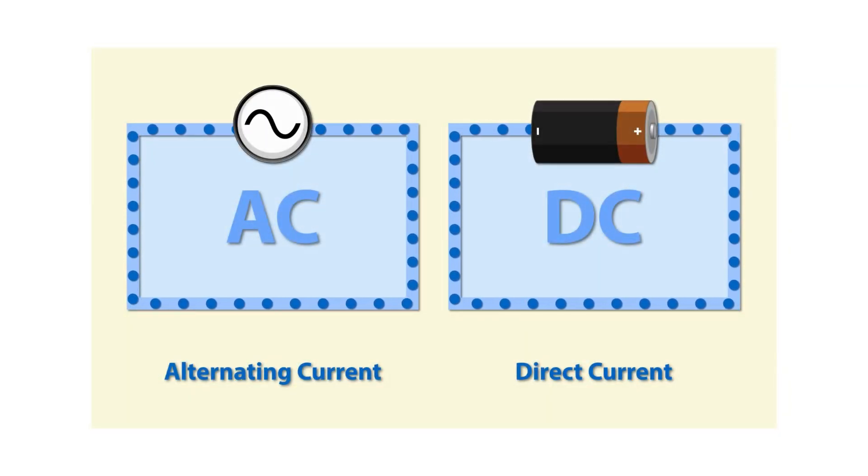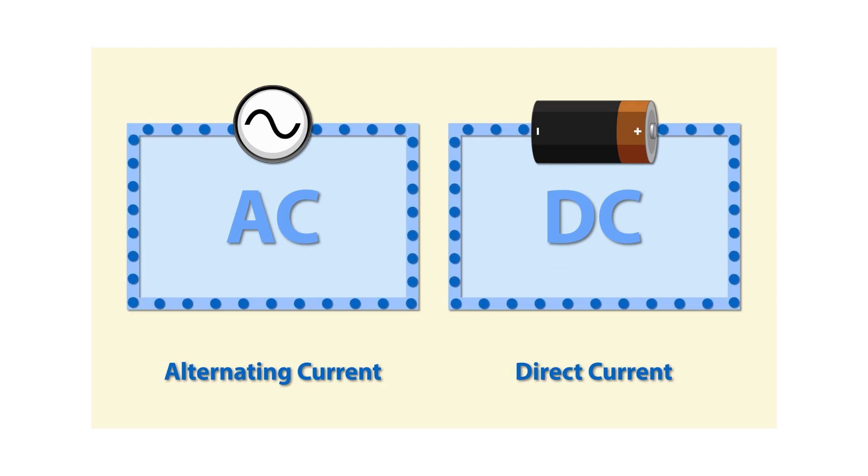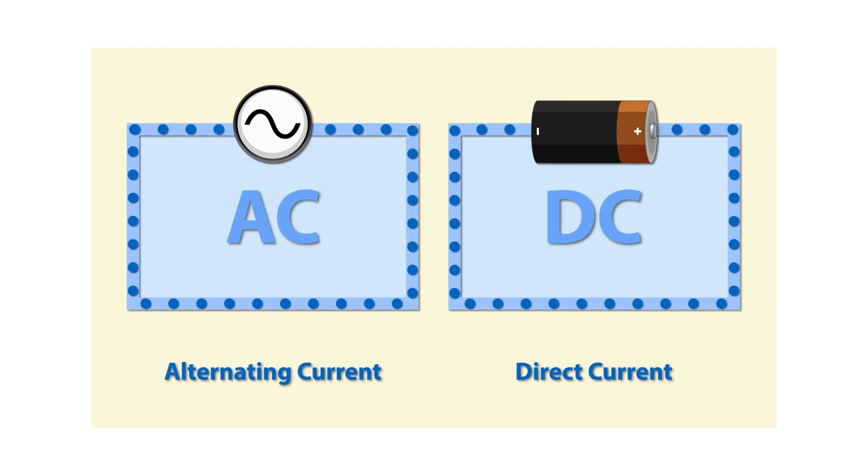Capacitors can work under direct current or alternating current conditions. Although the operating principles are still the same in both cases, capacitors exhibit some special properties when connected to AC, and we will discuss these in a separate video.